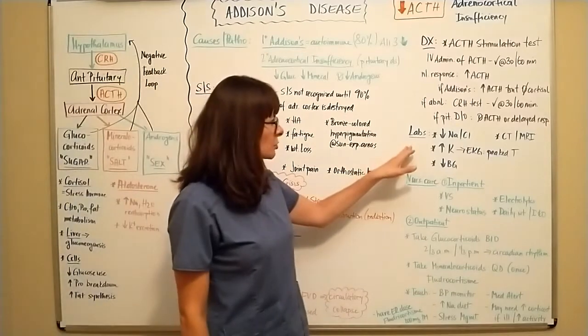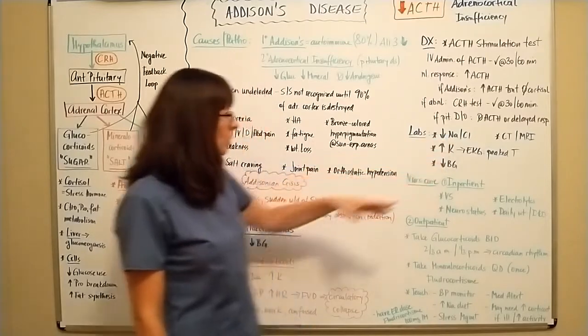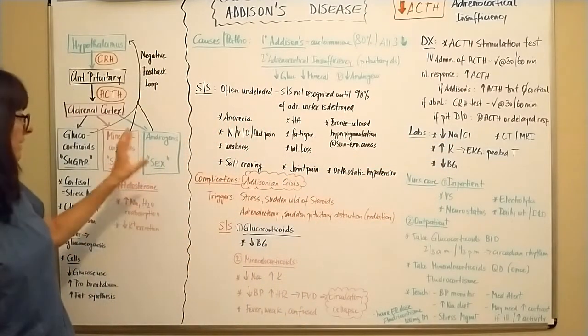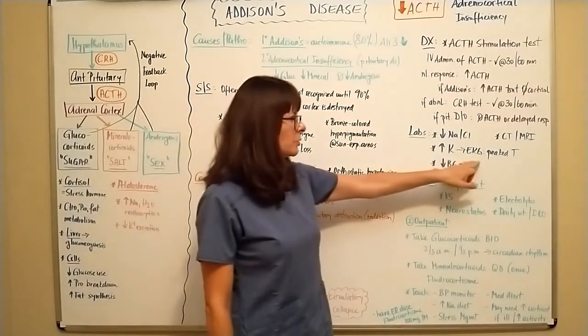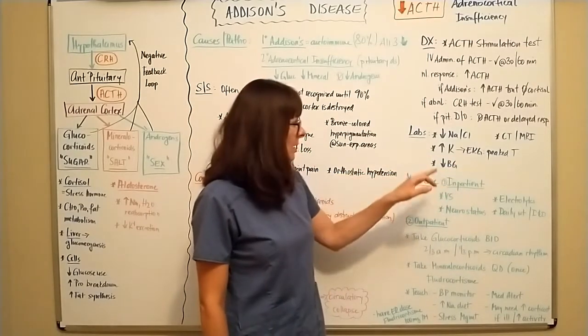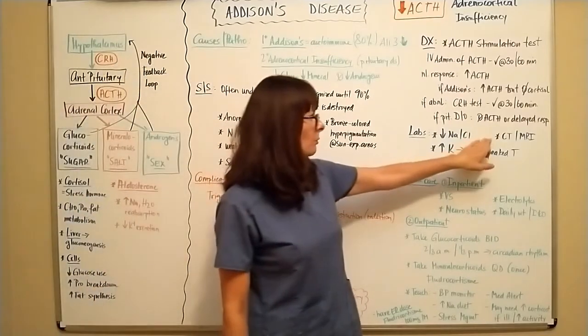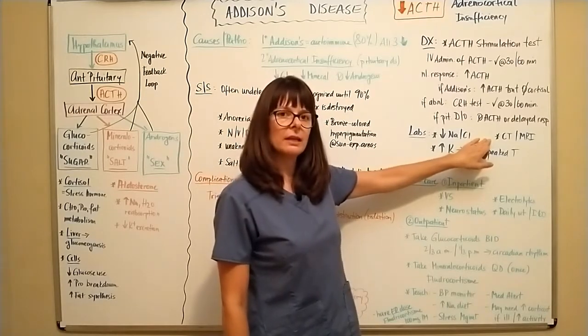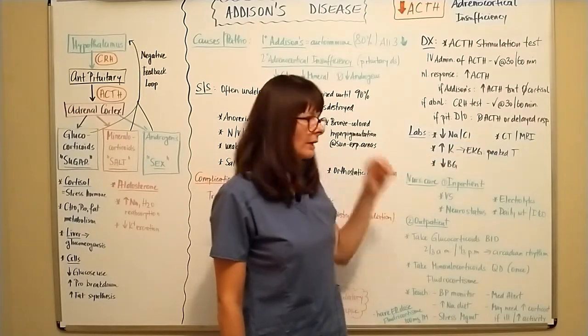Lab results to be expected in Addison's disease would be low sodium and chloride, because again, we're not able to do the reabsorption here. Everything is decreased, which then leads to hyperkalemia, which can lead to peak T waves on an EKG and can be dangerous. It'll lead to hypoglycemia, as we discussed over here. And we would want to evaluate a CT or MRI to see if there's any kind of structural defects to the adrenals or the pituitary gland.